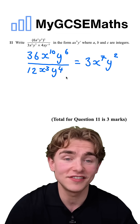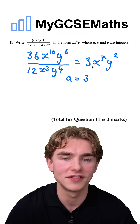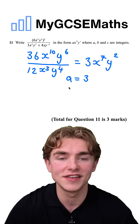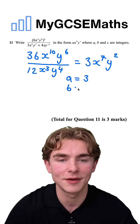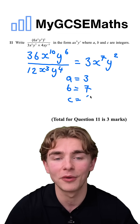We could say that a is equal to 3, the number at the start. b is equal to 7, the power on the x. And c is equal to 2, the power on the y.